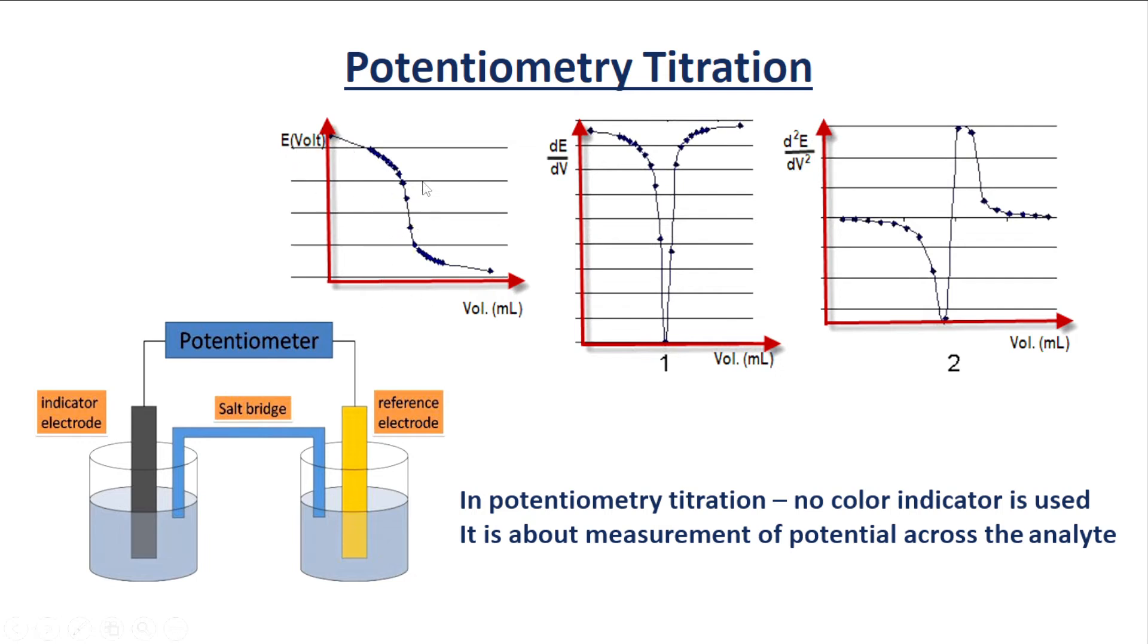At the equivalence point, all the analyte is already titrated, and according to this volume, the analyte concentration can be measured. This one is the first derivative of this plot showing the potential change, and there is the second derivative of this potential change.